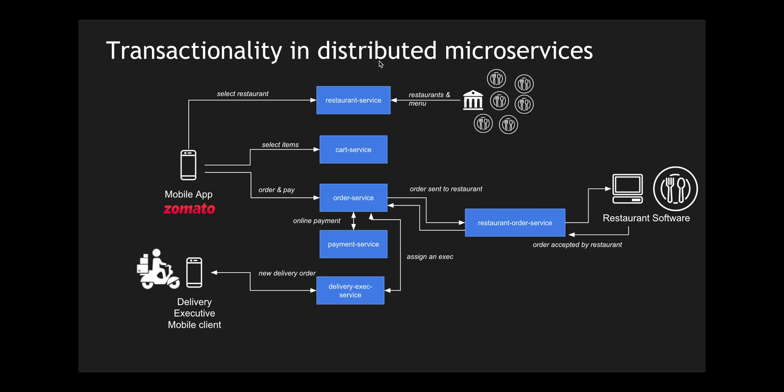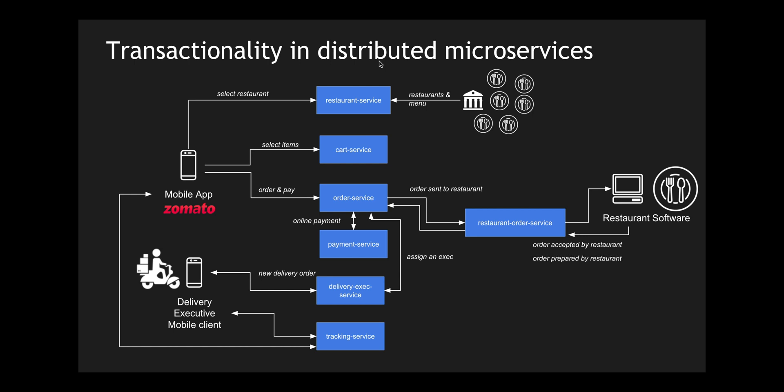Once the delivery executive has been identified, he is assigned a new delivery order that goes to his mobile app. Parallelly, as a user we can see who has been assigned and where he currently is. There is a tracking service which tracks the delivery executive's location and sends that back to the mobile app. We can view if the delivery executive is present in a particular area. The next step is for the order to be ready — the restaurant personnel says the food is prepared, and the delivery executive needs to be present at the restaurant.